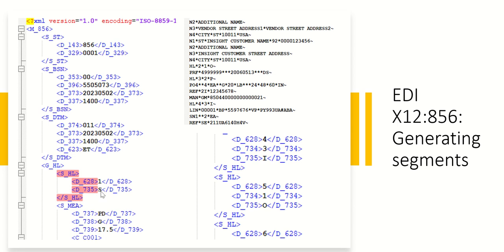We need to put logic for the SOIP or SOPI generation. We can use our own mapping techniques, and once that is done — SOIP and SOPI generation as per the business requirement — we then need to generate the segment sequence for D_628 as well as D_734.